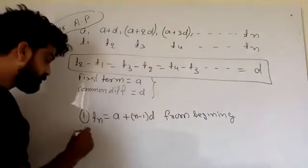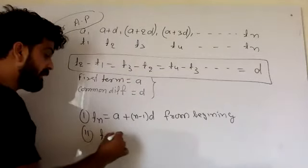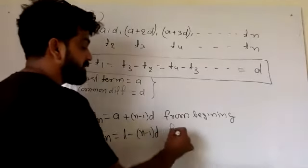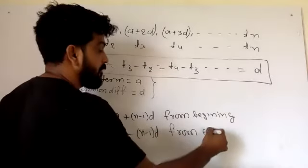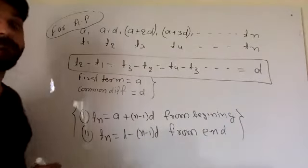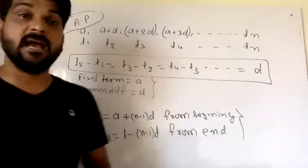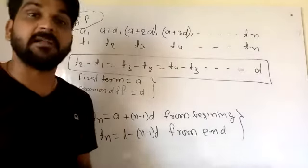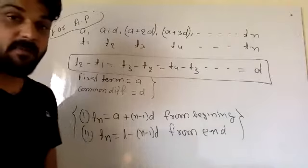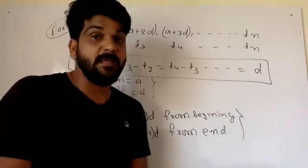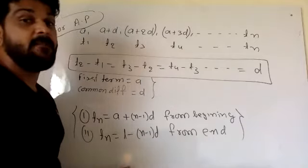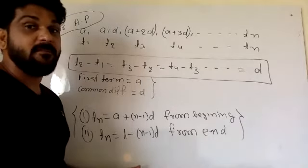Formula number 2: TN is equal to L minus (N minus 1) into D. This is from the last term — from the end. TN value is L, where L means the last term, minus (N minus 1) into D. So formula one is TN equals A plus (N minus 1) into D, and formula two is TN equals L minus (N minus 1) into D.